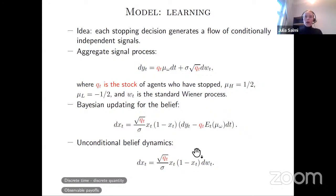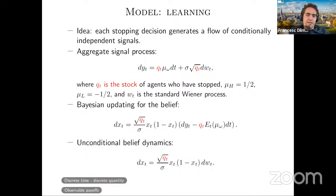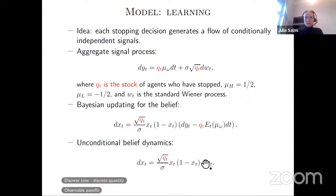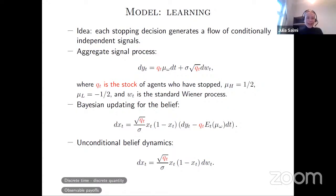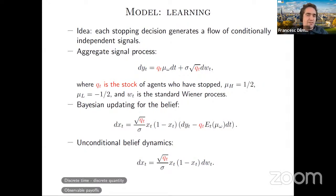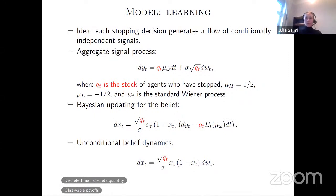A panelist asks for clarification: the aggregate signal is modeled as a Brownian motion, but interpreted as the sum of many individual signals — is there an equivalence between these two interpretations? Julia confirms yes, and clarifies that observing all these small signals is equivalent to the aggregate formulation. The panelist notes the distinction between changing the intensity versus adding independent signals, and Julia confirms the aggregate representation is the right way to think about it.